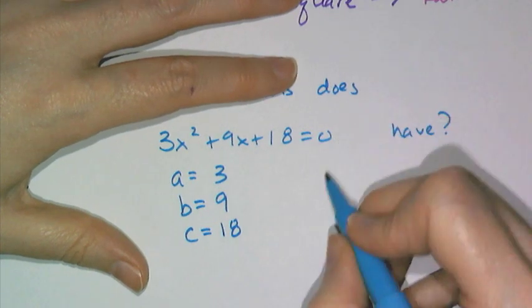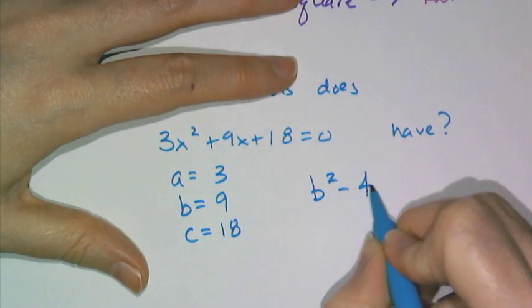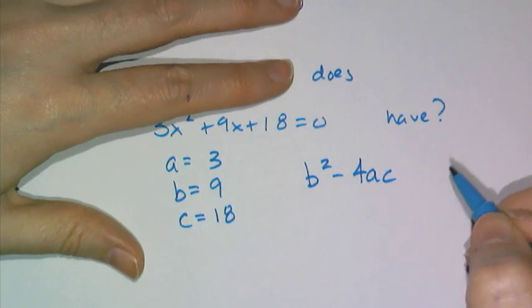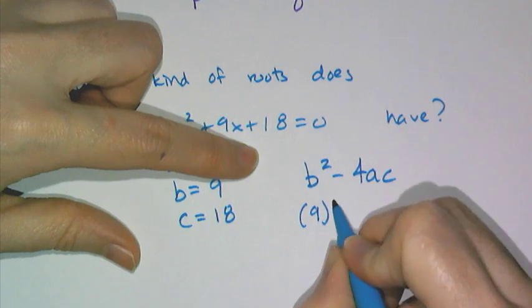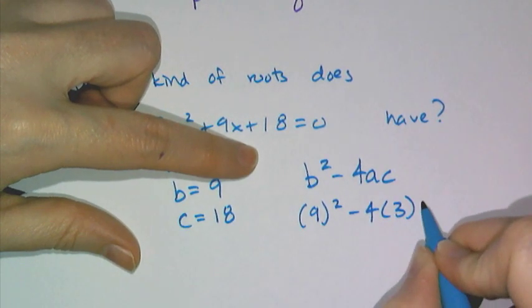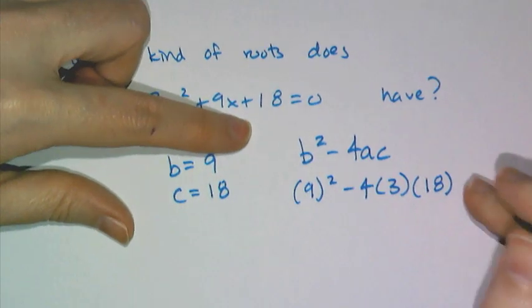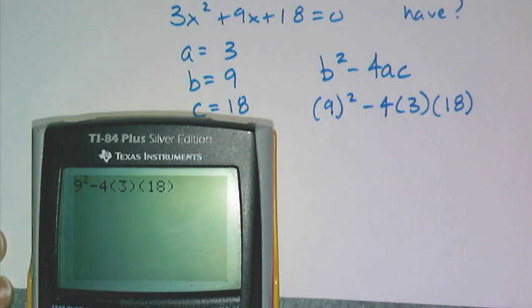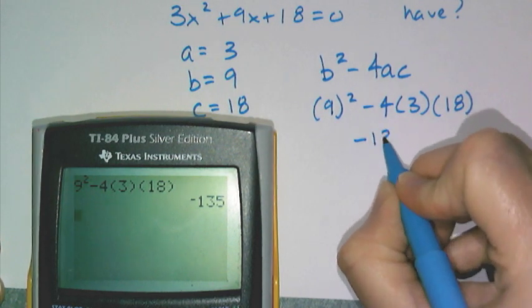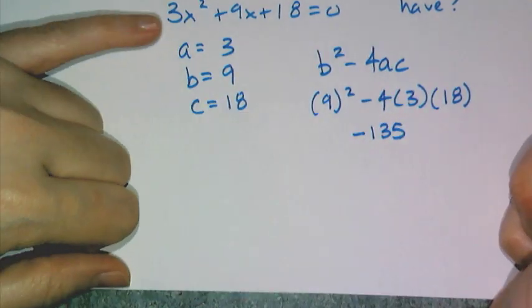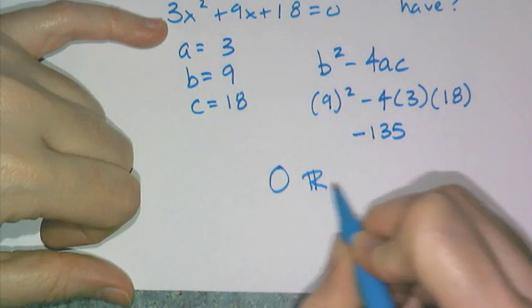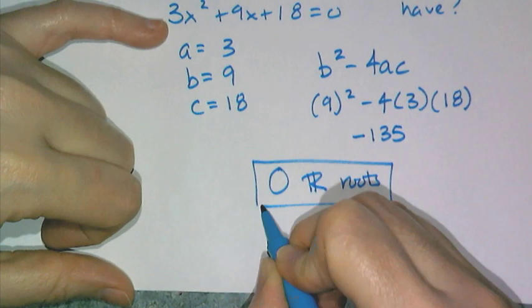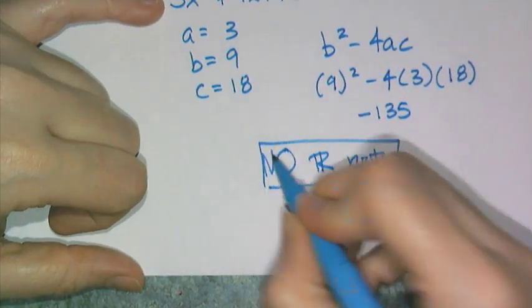I'm going to check the discriminant, I'm going to check b squared minus 4ac. So I'm going to plug in all of my numbers. So b squared is going to be 9 squared minus 4 times 3 times 18. And instead of doing the arithmetic by hand, I have this trusty graphing calculator, which will find everything for me, and I get negative 135. And so what does that mean for this equation? It means that there are 0 real roots, or you can say no real roots.